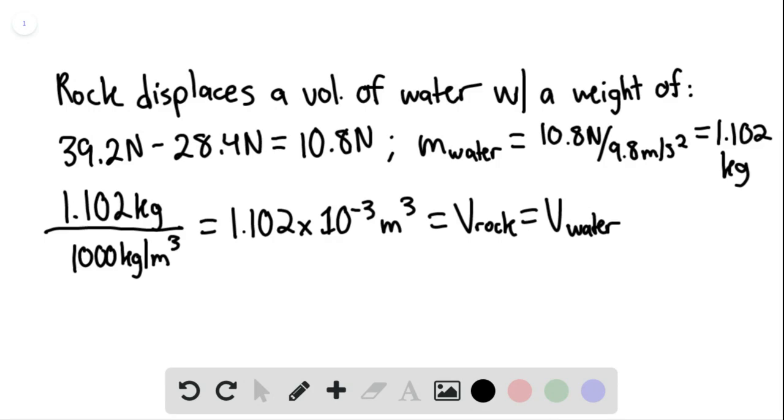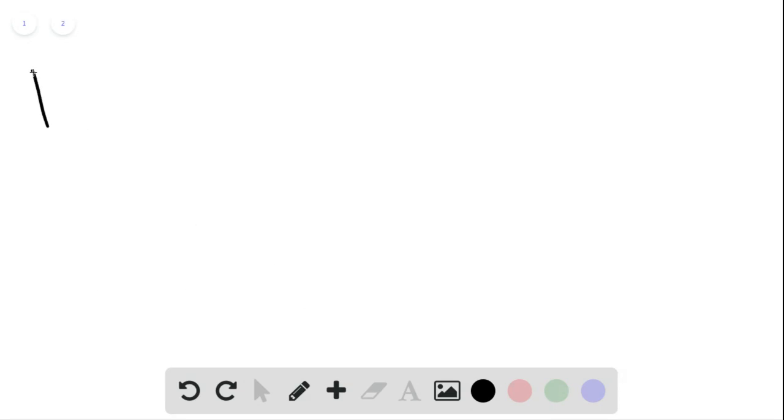The weight of the unknown liquid displaced equals 39.2 newtons minus 21.5 newtons, which is 17.7 newtons.